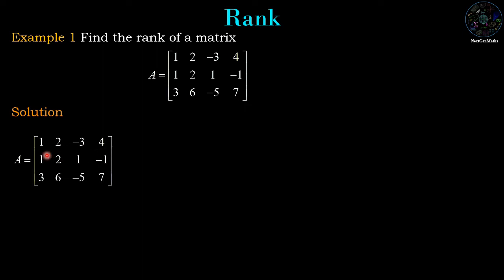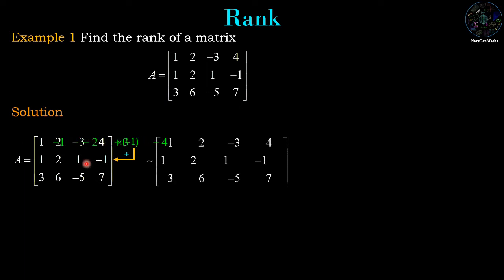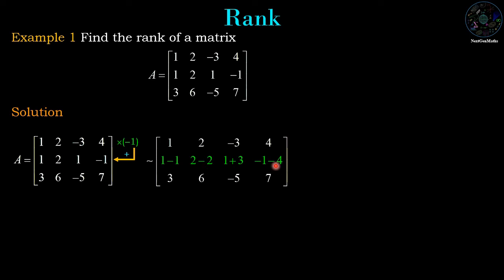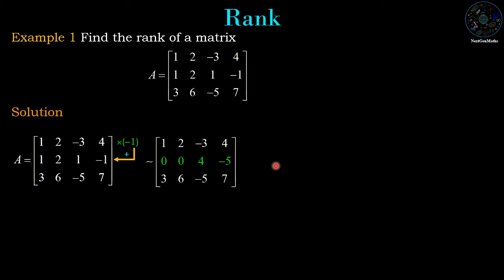In the row echelon form we try to make entries in position row 2 and row 3 zero. We apply the operation: multiply row 1 by minus 1 and add it to row 2. This gives: row 1 remains 1, 2, -3, 4; and the new row 2 becomes 0, 0, 4, -5.